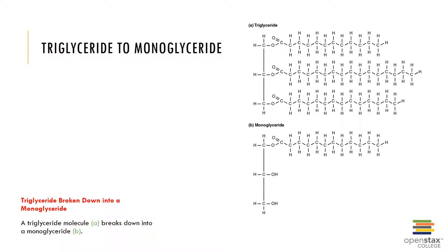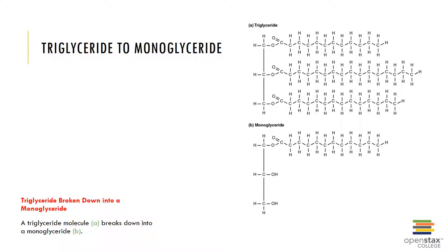For each step in beta-oxidation, the cell gains 17 ATPs, and the process is repeated until the entire fatty acid has been broken down. This process is very efficient and can produce 51 ATPs for a 6-carbon fatty acid chain — recall only 36 ATPs can be formed from breaking down the 6-carbon molecule of glucose. Here you can see the structure of a triglyceride and how it can be broken down into a corresponding monoglyceride. Chylomicrons contain triglycerides, cholesterol molecules, and other protein molecules.